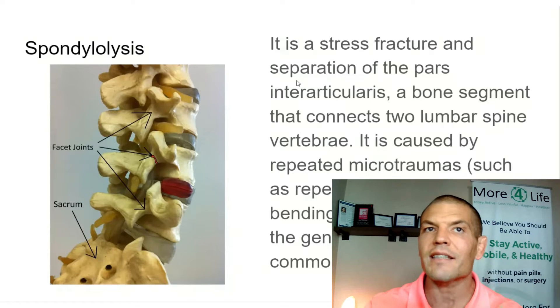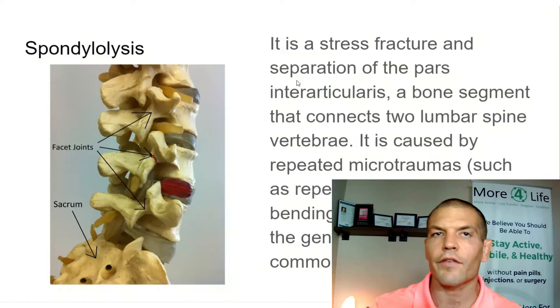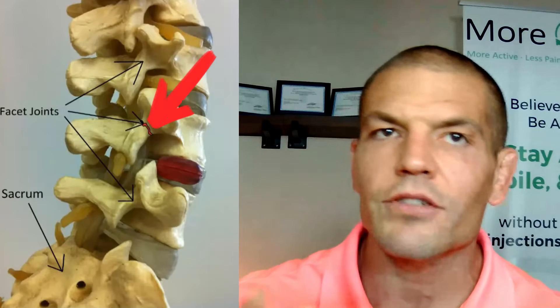Spondylolysis means a fracture, usually in a part of the vertebrae called the pars interarticularis, where you see the red line there. When that breaks off, the front part — the body of the vertebrae — can start to slide forward. That sliding forward is sometimes known as spondylolisthesis, another term that can be really confusing alongside spondylosis and spondylolysis.